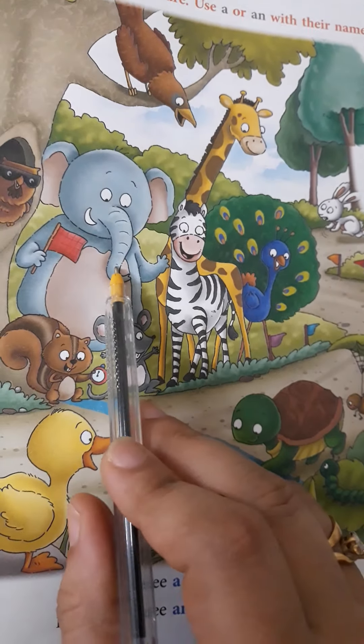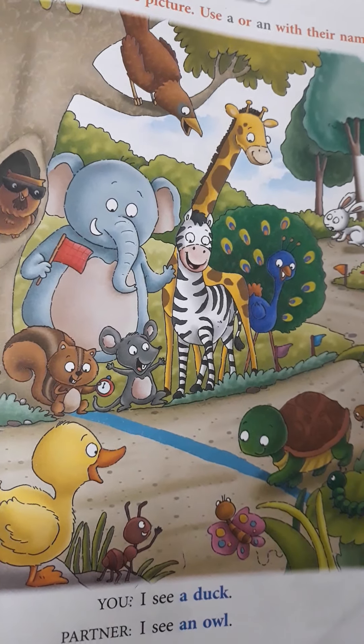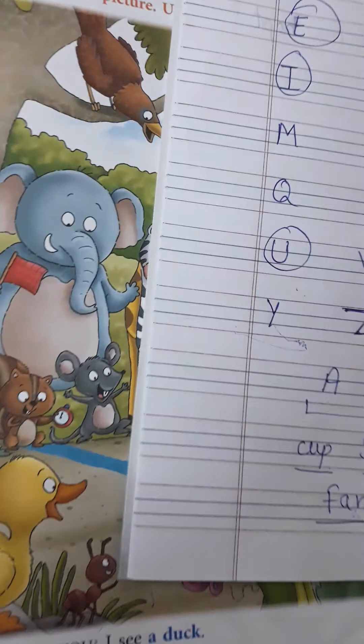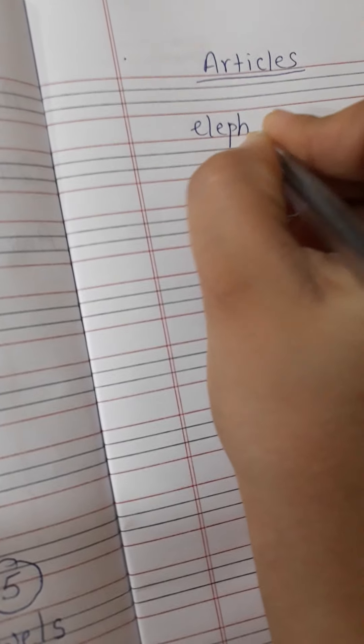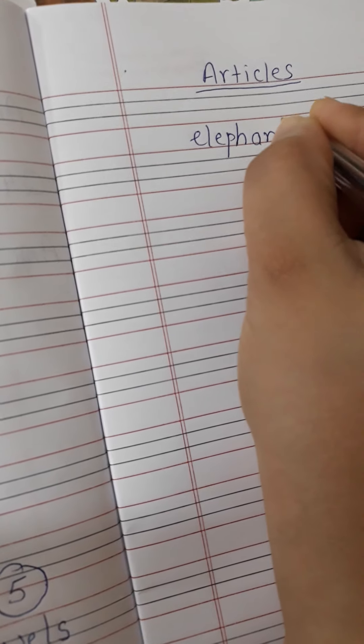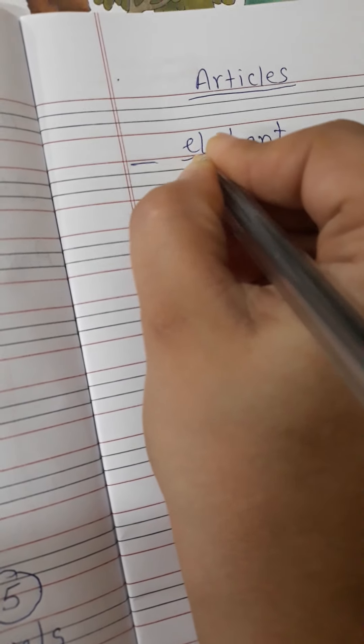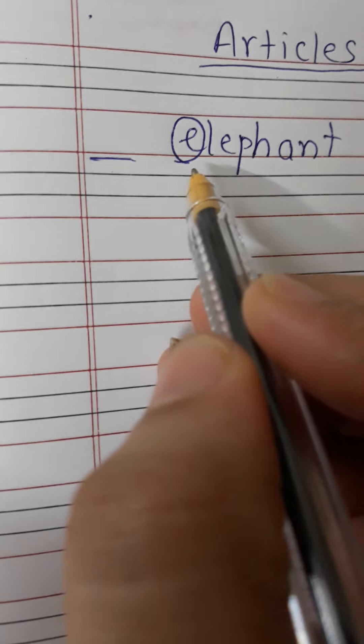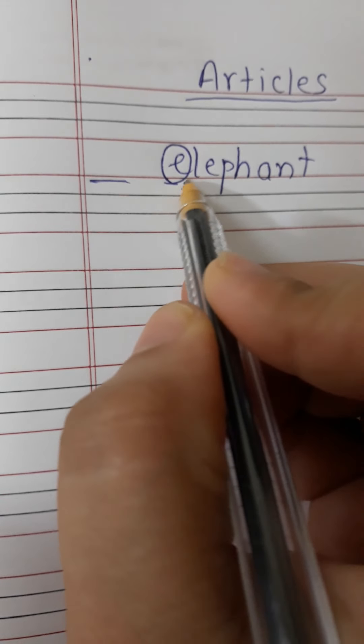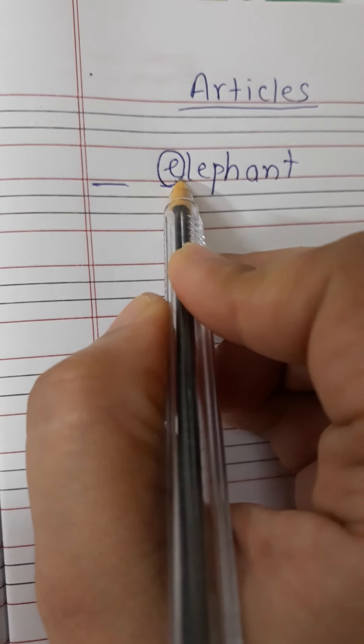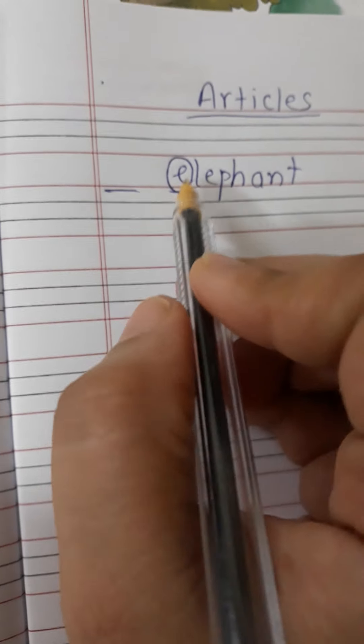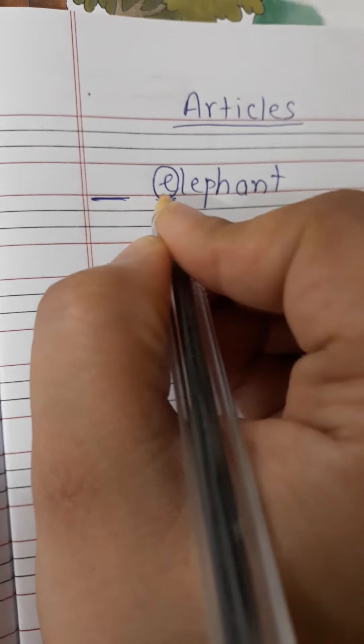Now, see this animal. Which animal is this? Elephant. Elephant. This is how we write elephant. Now, it starts with letter E. Now, sing the song. Do you have this letter in your song? A, E, I, O, U. E. Yes! It is there. E. Elephant. So, what are we going to write here? A or AN? This is a vowel. So, with every vowel we will write AN. Okay?